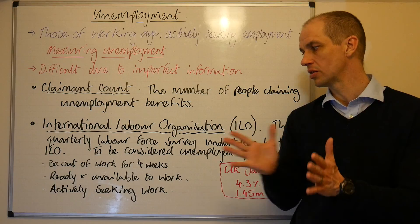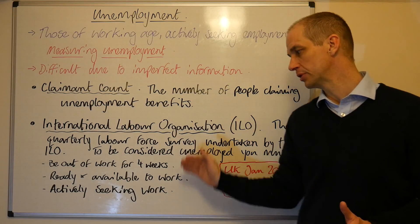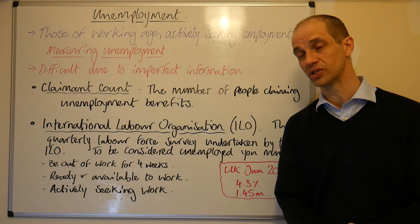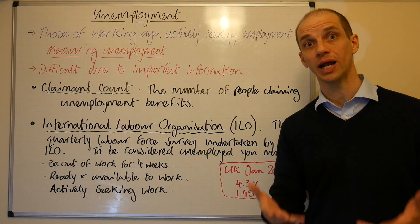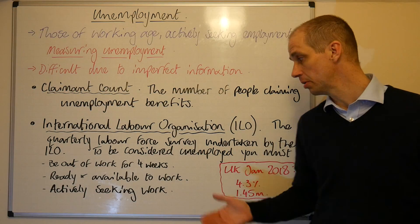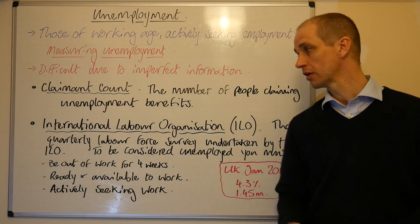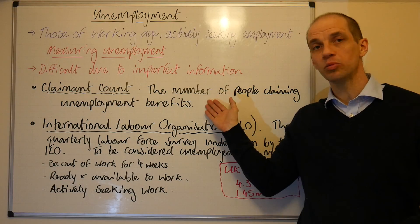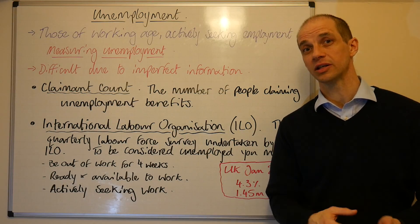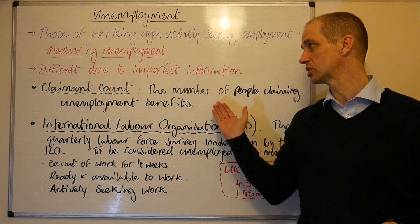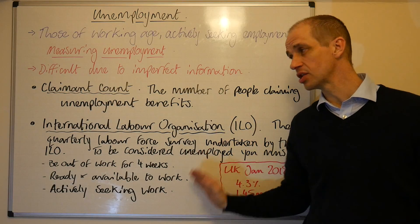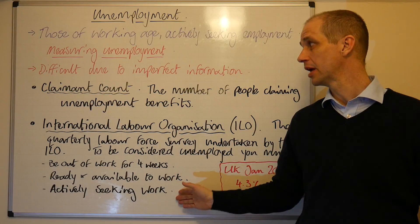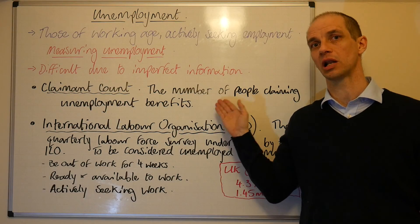There are a number of distinctions between the claimant count, which is simply about whether you're actually receiving unemployment benefits, and those people who are actually interested in finding a job and pursuing that quickly. For some people — those that have high savings — they wouldn't actually qualify for any unemployment benefits, so why would you bother signing on? As a result, the ILO measure will be higher in most circumstances than the claimant count will be.